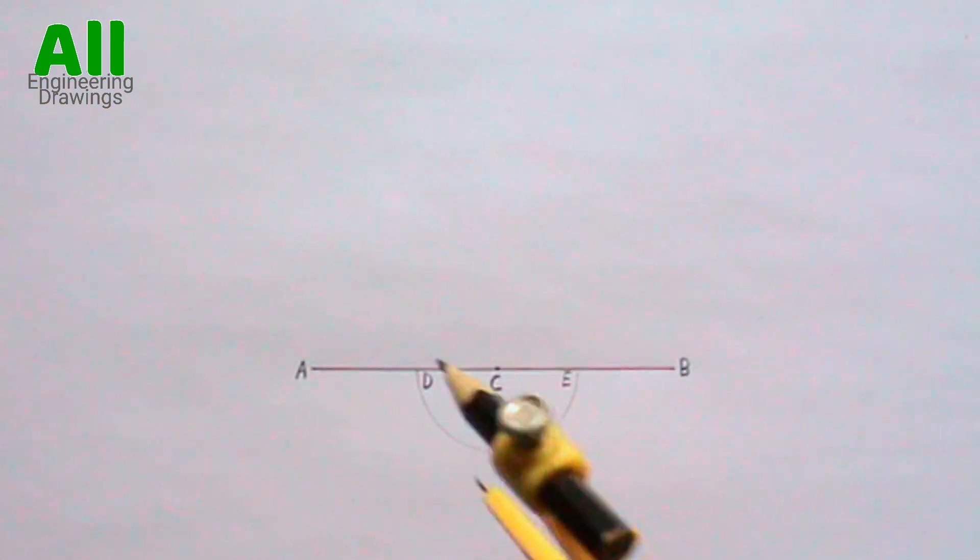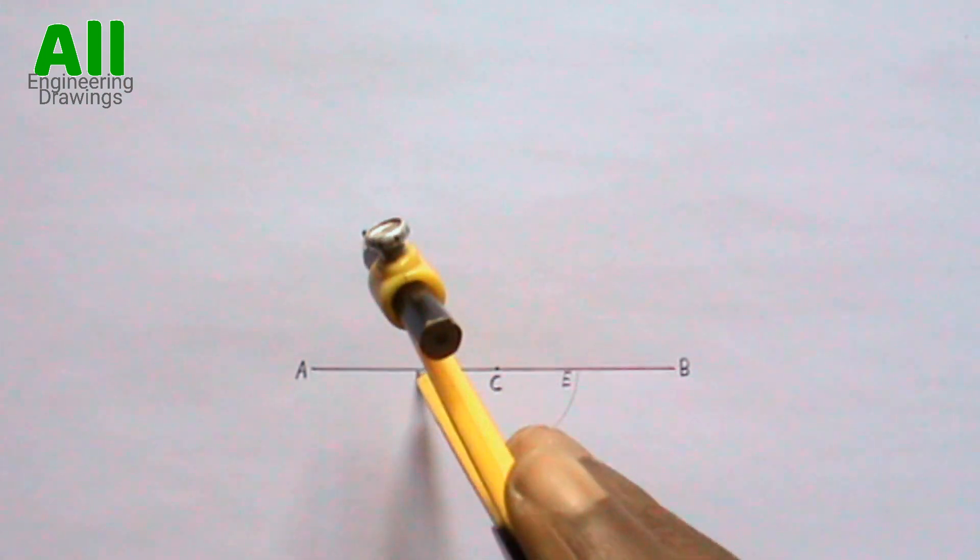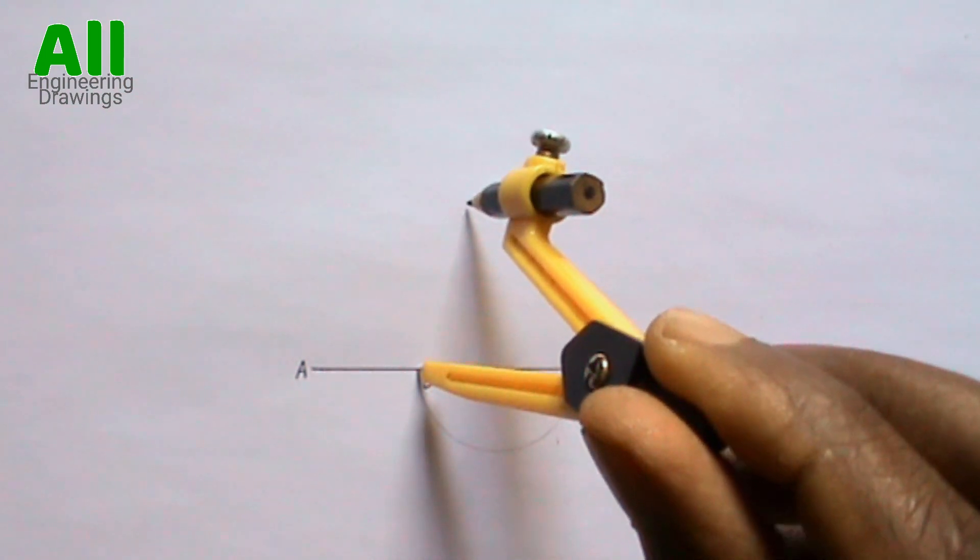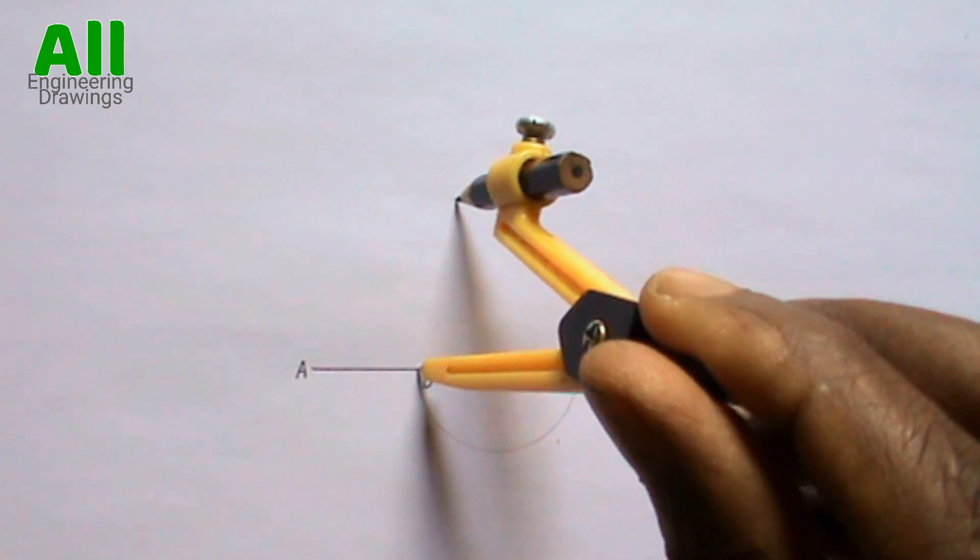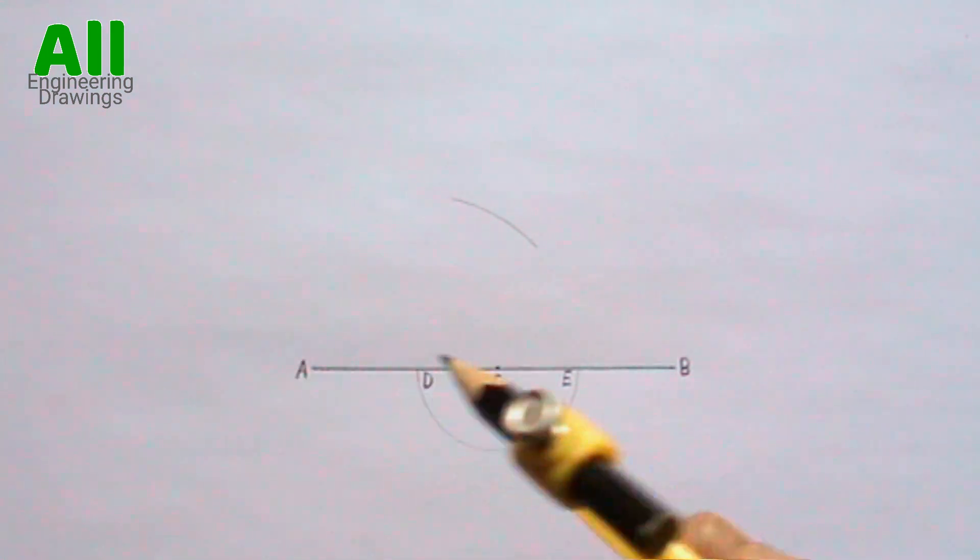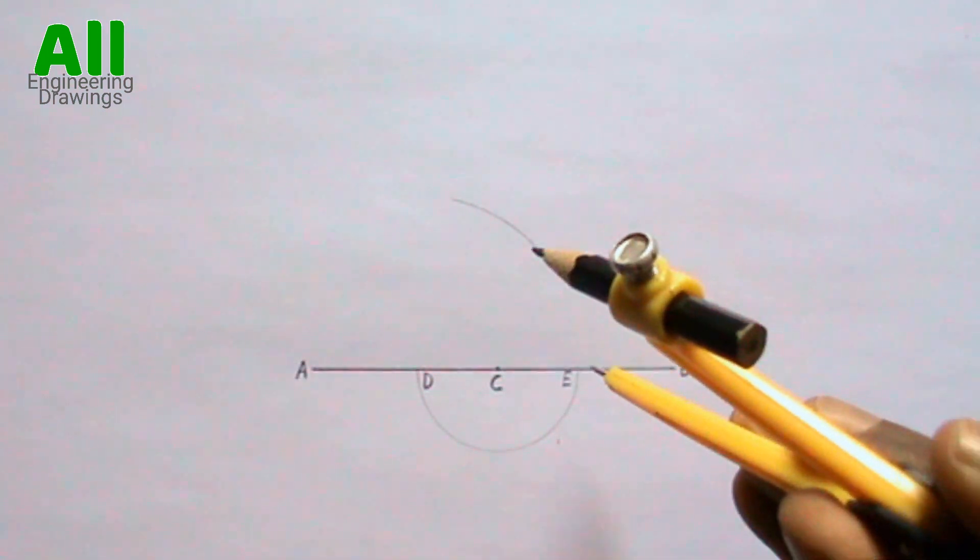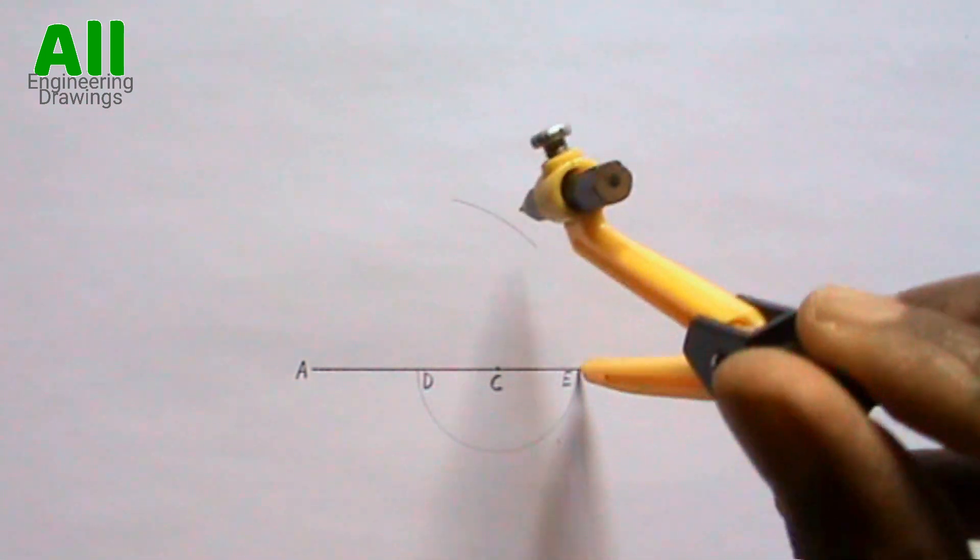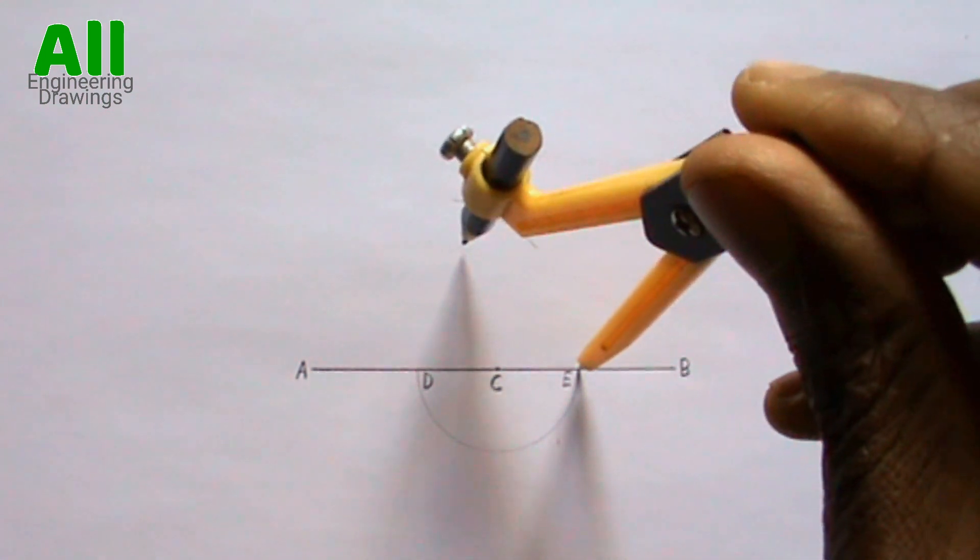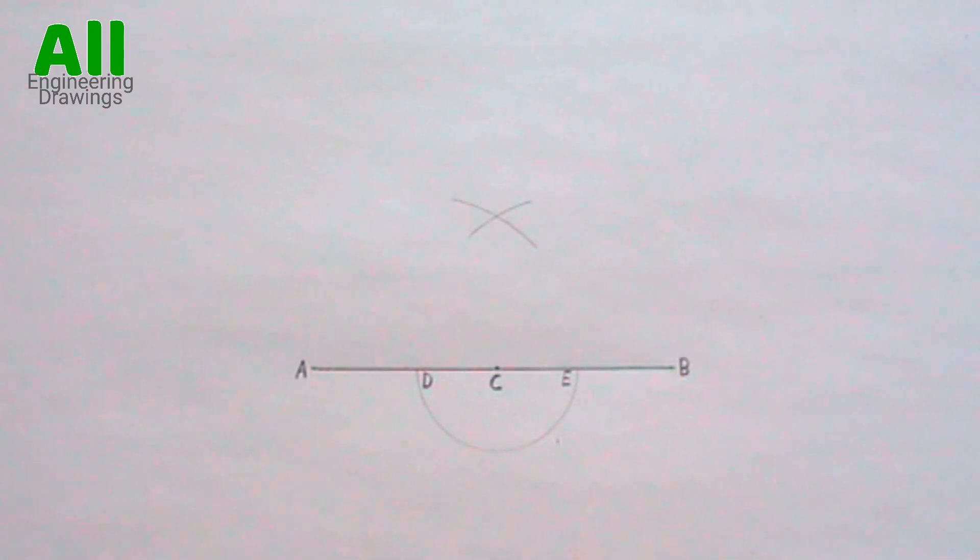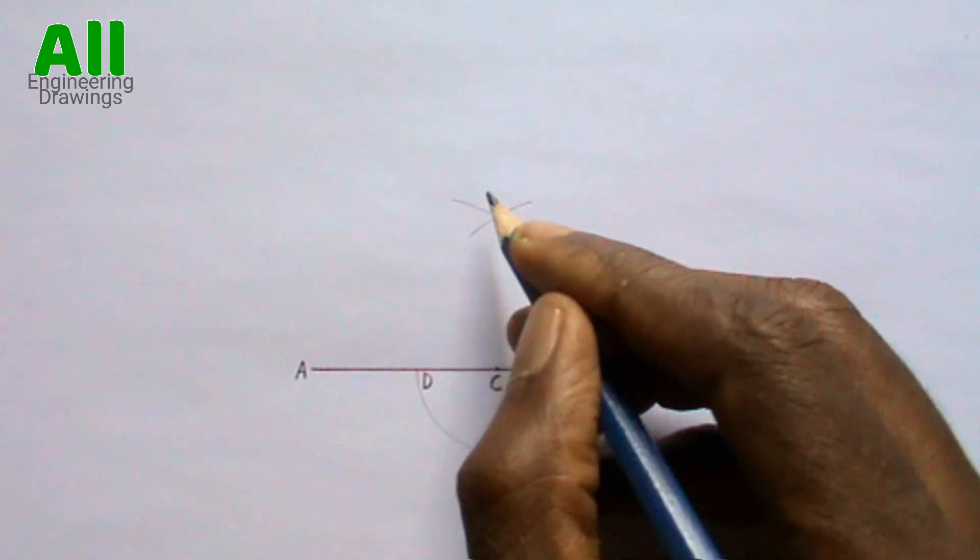Now, place your compass at point D, then with any convenient radius, cut an arc this way. Also, place your compass at point E. With the same radius, cut another arc. This arc should intersect the previous arc. Label the point where the arcs intersect.